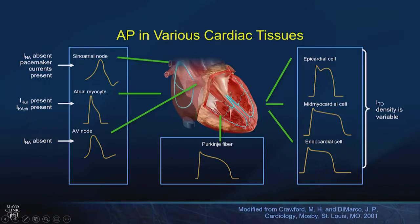The Purkinje fiber has a longer action potential duration — we don't want reentry there, or we'd end up with things like fascicular VT. The endocardium, mid-myocardium, and endocardium have slight variations in action potential duration and notching. This creates a potential for dispersion of repolarization, which becomes the substrate for torsade de pointe — a twisting of the electrical impulse through the myocardium.